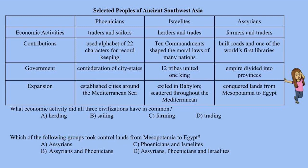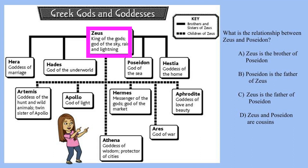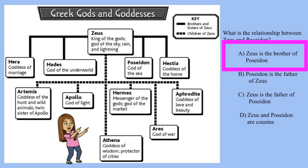Here's a chart showing the Greek gods and goddesses — this is where it's important to pay attention to the key. Coming off of Zeus, you have solid lines and dotted lines. The key shows that solid lines are brothers and sisters of Zeus, while dotted lines are children of Zeus. The question asks what is the relationship between Zeus and Poseidon. Following Zeus down to Poseidon, the line joining them is solid, which means they are brothers — not children, because children use a dotted line. So the answer is A: Zeus is the brother of Poseidon.